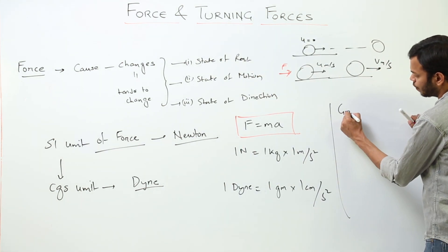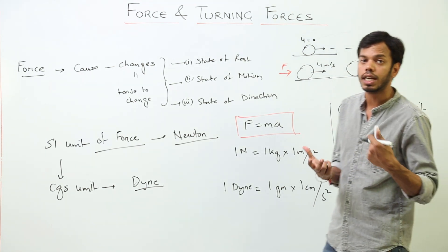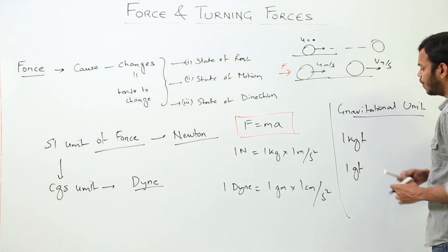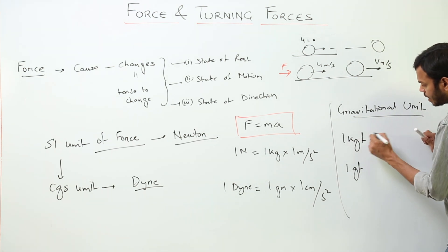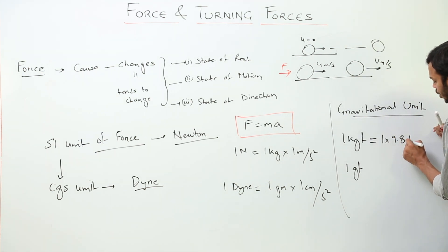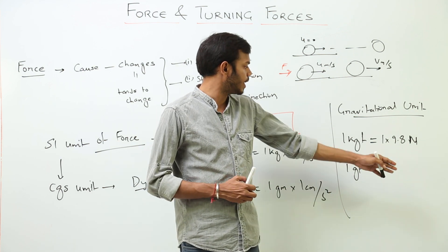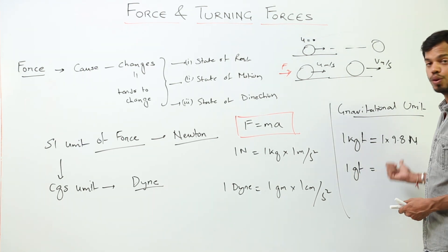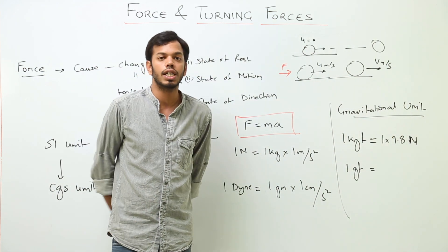Are there any other units of force? Yes — that is called the gravitational unit of force, which is the force by which the Earth attracts a body. This is represented as either 1 kgf (kilogram-force) or 1 gf (gram-force). 1 kgf can be converted into Newtons by multiplying by 9.8 (acceleration due to gravity), giving 9.8 N. Similarly, 1 gf can be converted to dynes by multiplying by 980 cm/s², or to Newtons by multiplying by 9.8.